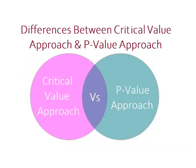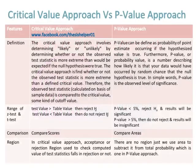Differences between critical value approach versus p-value approach. The critical value approach involves determining whether the observed test statistic is more extreme than would be expected if the null hypothesis were true. The critical value approach finds whether or not the observed test statistic is more extreme than a defined critical value. Therefore, the observed test statistic calculated on the basis of sample data is compared to the critical value.